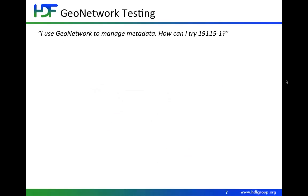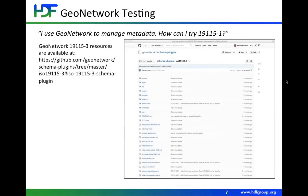I know a lot of people in New Zealand and Australia are using GeoNetwork — a great metadata repository tool — and you might be interested in trying 19115-1 with that. Francois is working on a GeoNetwork plugin for 19115-1, also called the dash-3 schema. This is also available openly and publicly, and our hope is to have GeoNetwork be ready to use these new improvements very soon, even now.